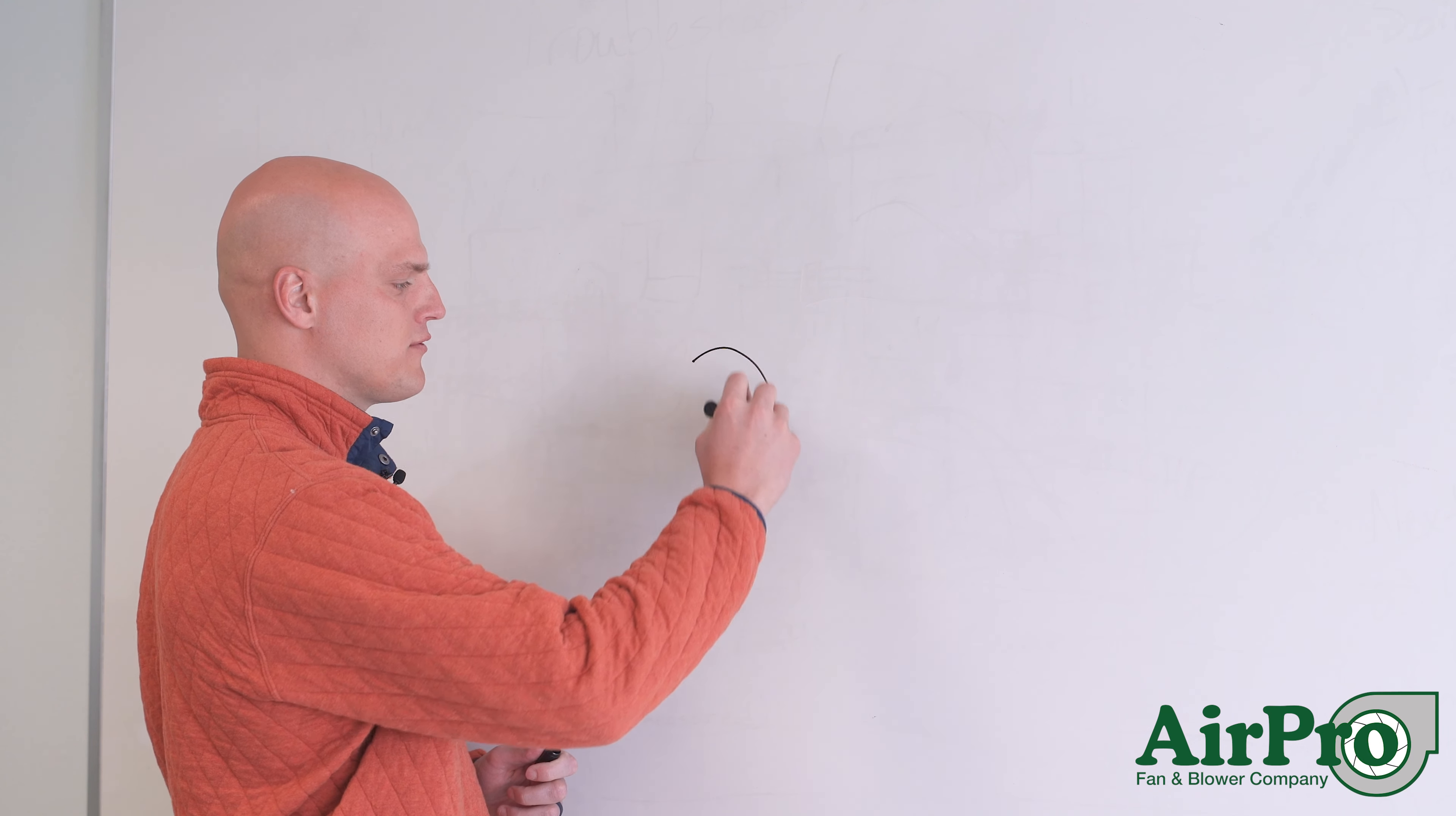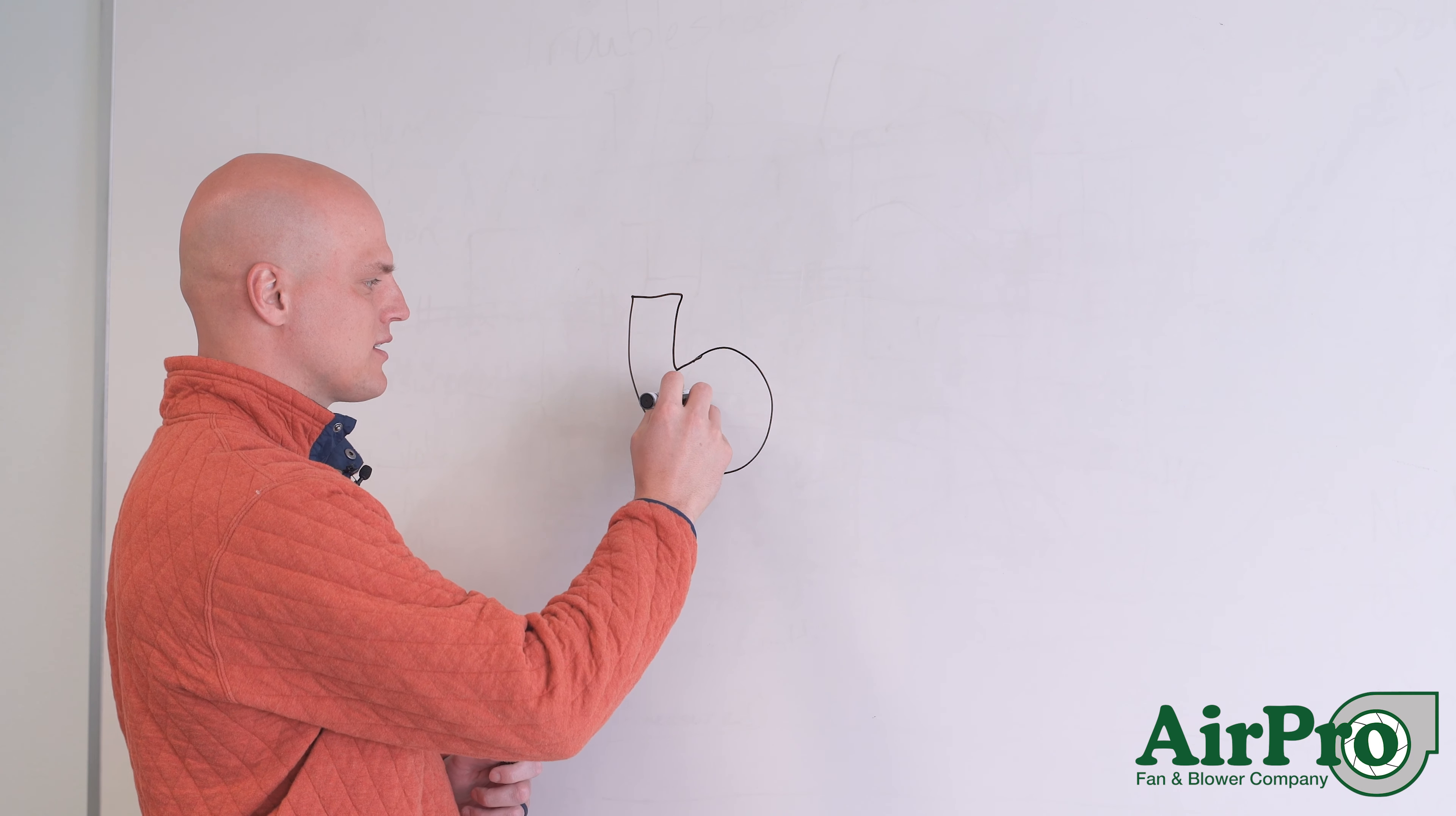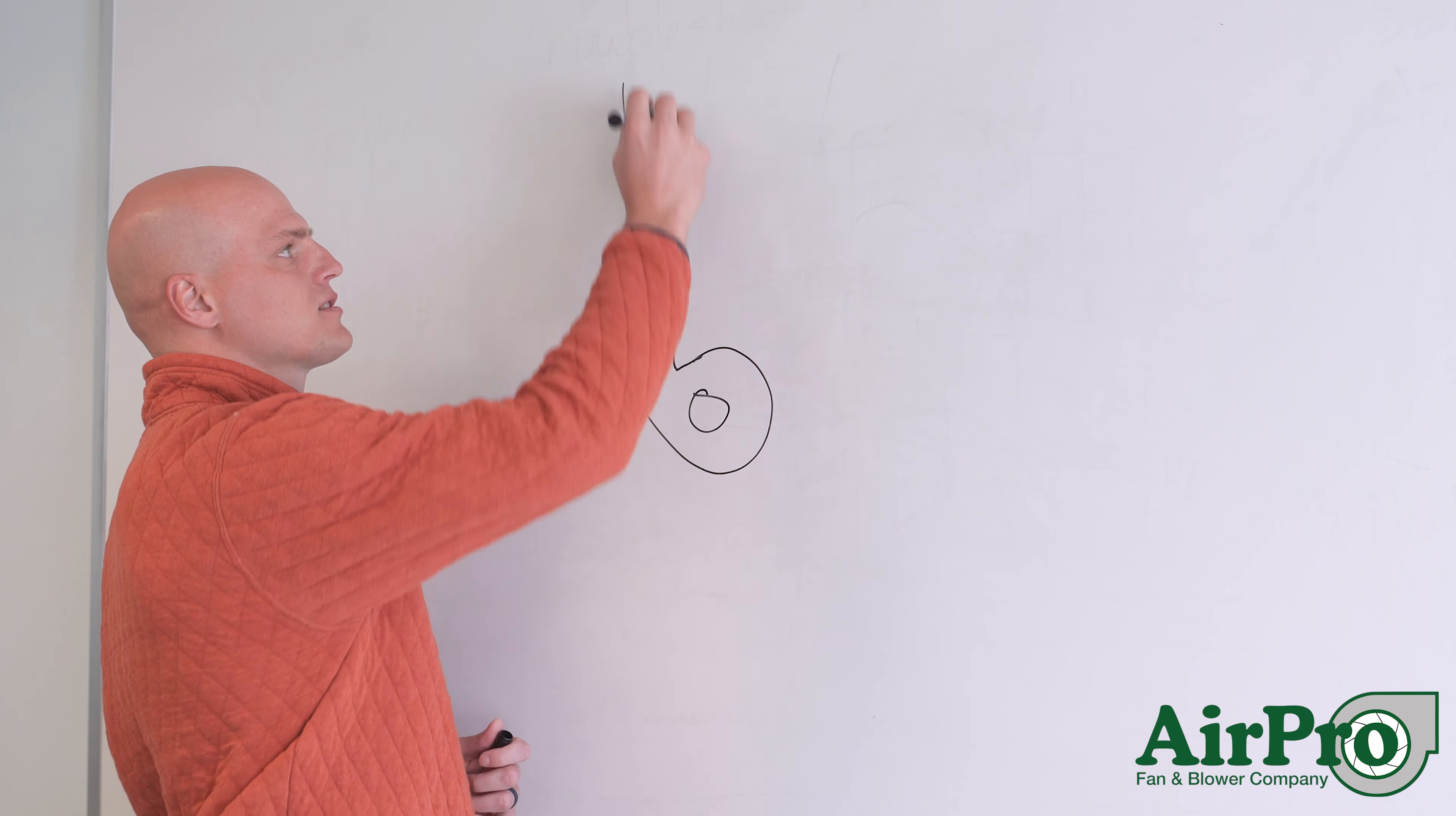So let's say you've got a centrifugal fan, vertical up blast like this one. So you've got your wheel here, your inlet coming in, you've got a discharge going up, and then you've got some duct work coming off.